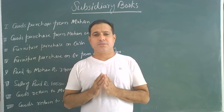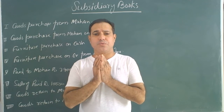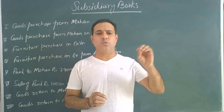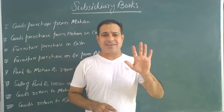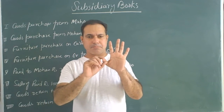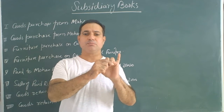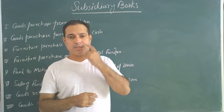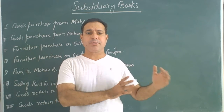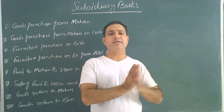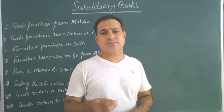Hello students, today we will try to understand which transaction goes to which type of subsidiary book. There are five types of subsidiary books: purchase book, sales book, purchase return book, sales return book, and cash book. Along with these five subsidiary books, we also prepare a general journal for the remaining transactions.